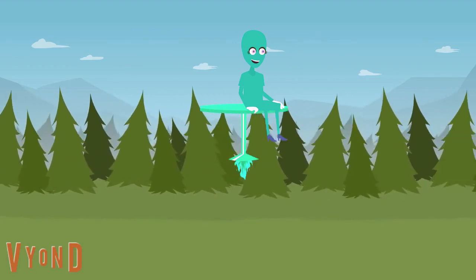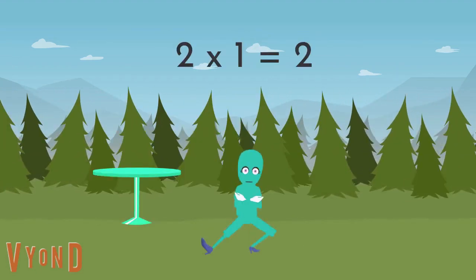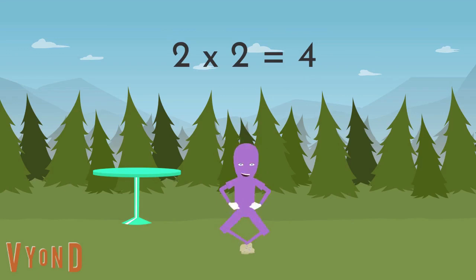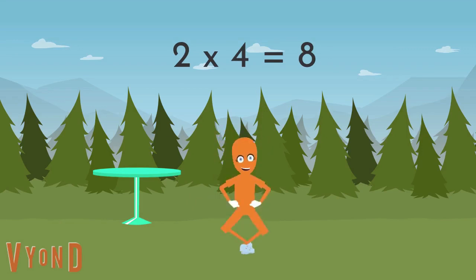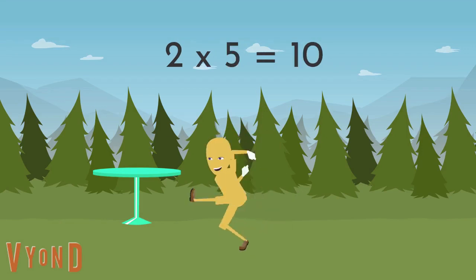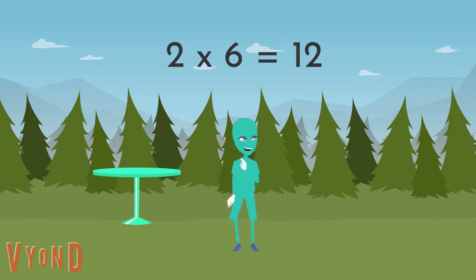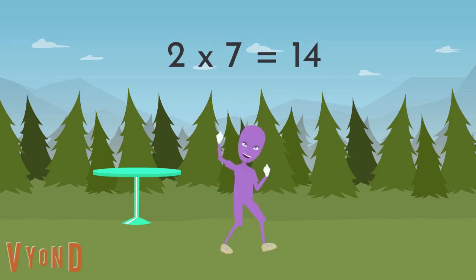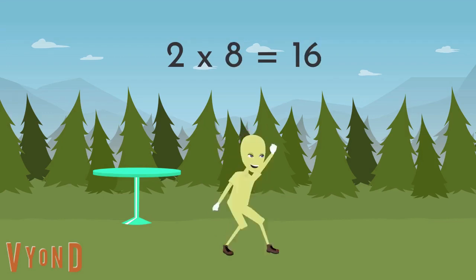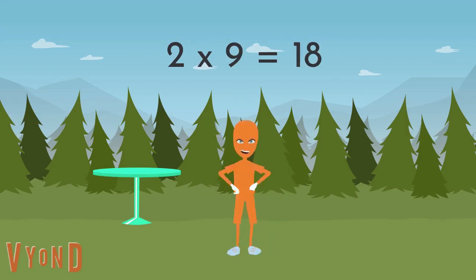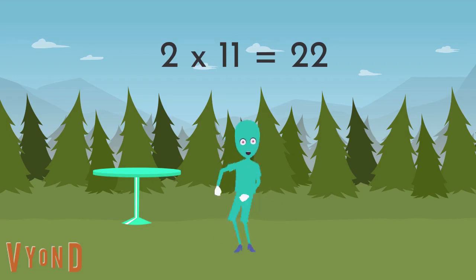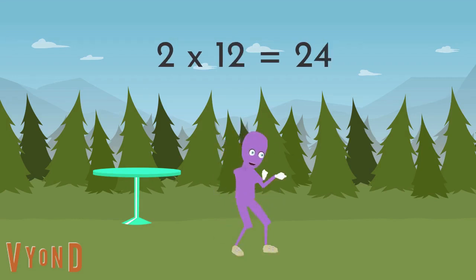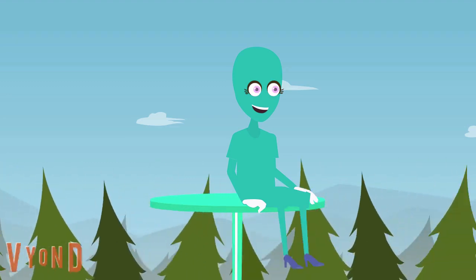Two times one is two. Two times two is four. Two times three is six. Two times four is eight. Two times five is ten. Two times six is twelve. Two times seven is fourteen. Two times eight is sixteen. Two times nine is eighteen. Two times ten is twenty. Two times eleven is twenty-two. Two times twelve is twenty-four.